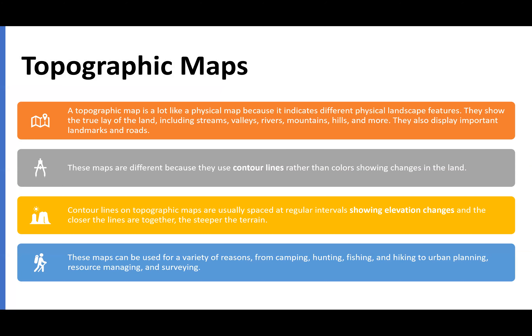Topographic maps are different from physical maps because they indicate different physical landscape features. They show the true lay of the land, including streams and natural elements, but they also display important landmarks and roads. They use contour lines rather than colors to show changes in the land. Contour lines represent elevation changes — the closer the lines, the steeper the terrain; the farther apart, the less significant the slope.